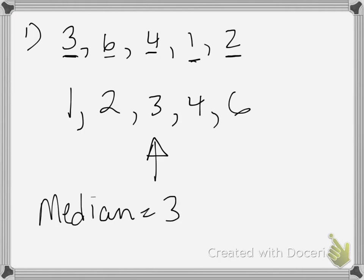Before we move on, let me explain why this one is easy. This data set has an odd number of items — there are five items. Whenever you have an odd number of items, there will always be one very clear middle number. Because this data set is small, you might spot the 3 right away.